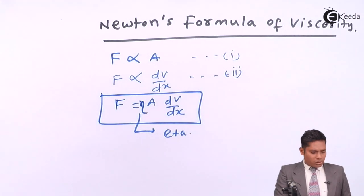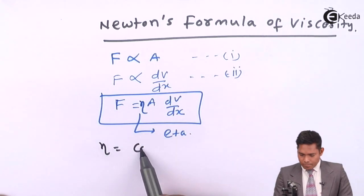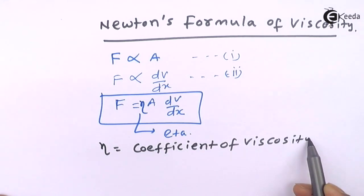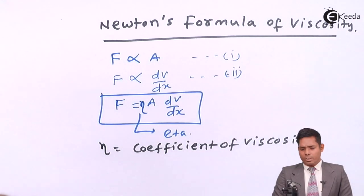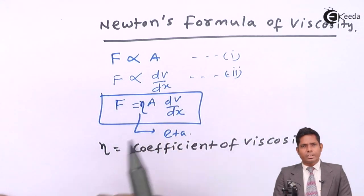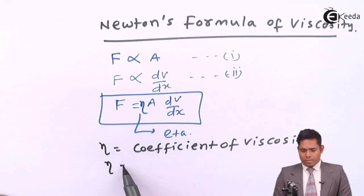this is what Newton observed and wrote this, where eta is a constant of proportionality known as coefficient of viscosity. It is known as coefficient of viscosity. Its unit will be, you can rearrange this and get the unit. Let us rearrange this and get the unit.